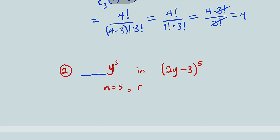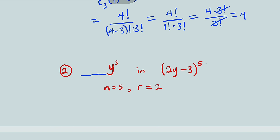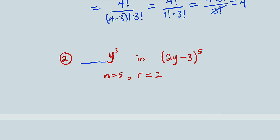r is always equivalent to the power of b. But y here is a, not b. So if y, which is a, has a power of 3, then b will have a power of 2, because the sum of the two powers always equals n. Therefore r is equal to 2, or equivalently 5 minus 3. So we have 5 combination 2, then the coefficient of a, which is 2y, is 2, raised to the power of n minus r, that is 5 minus 2 equals 3.